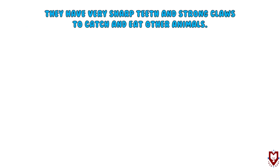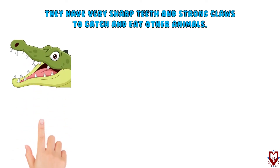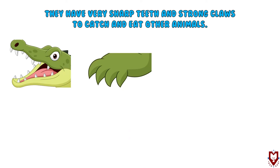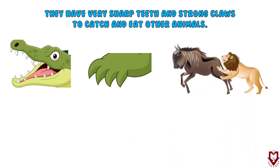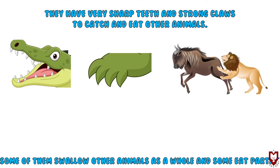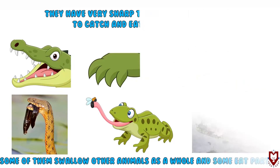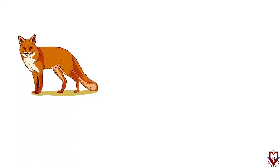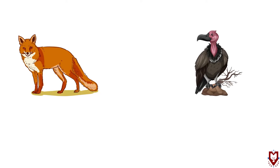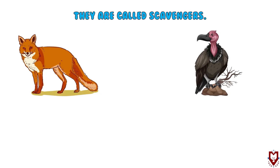They have very sharp teeth and strong claws to catch and eat other animals. Some of them swallow animals whole, like snakes, while others like crocodiles tear them into pieces. Animals like fox and vulture eat only the dead bodies of other animals, and they are called scavengers.